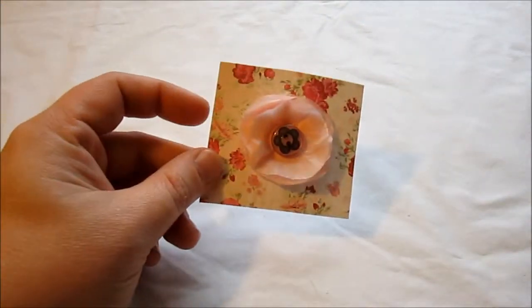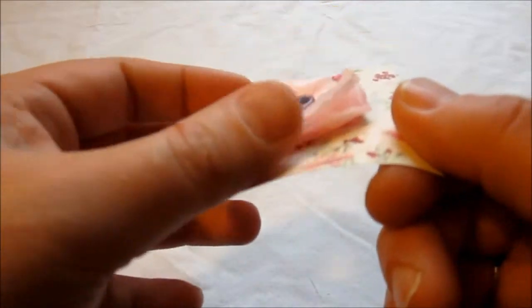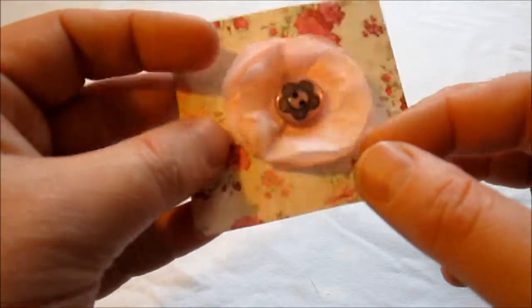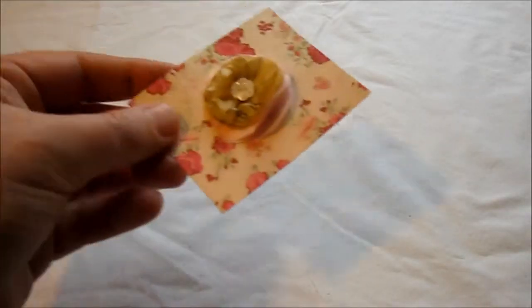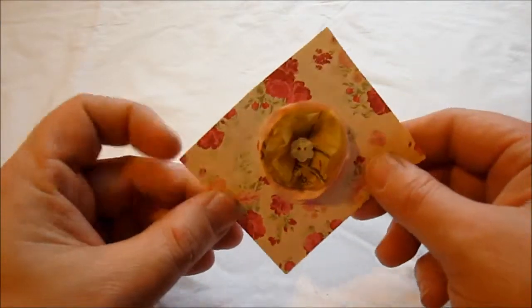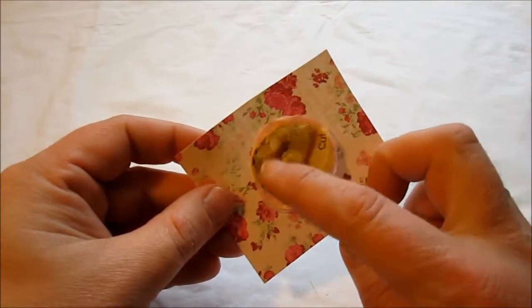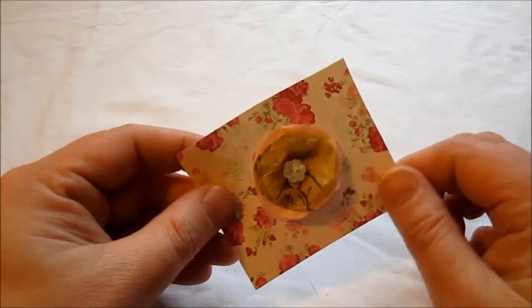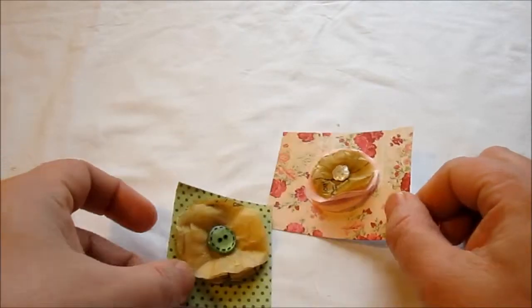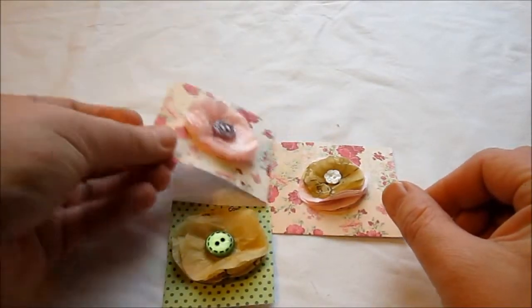I wanted to show you a couple more samples. This flower I made with just tissue paper using the exact steps I just showed you, and that's really cute. This one has both tissue paper and pattern paper, and I made the tissue paper in the middle smaller—that turned out really cute too.